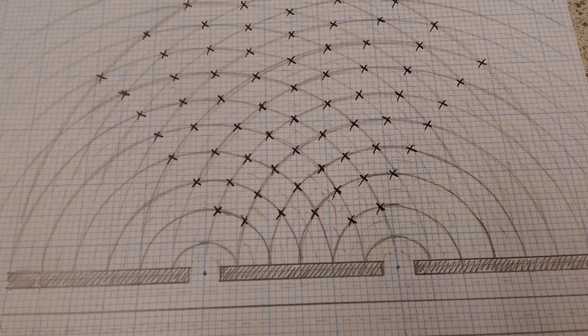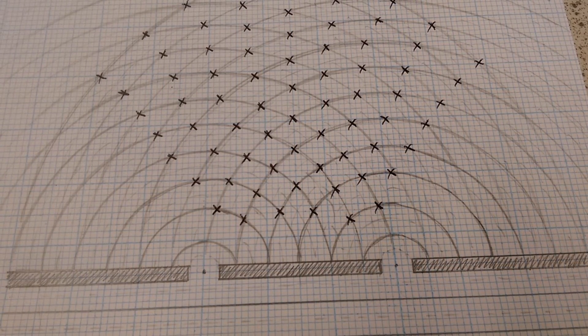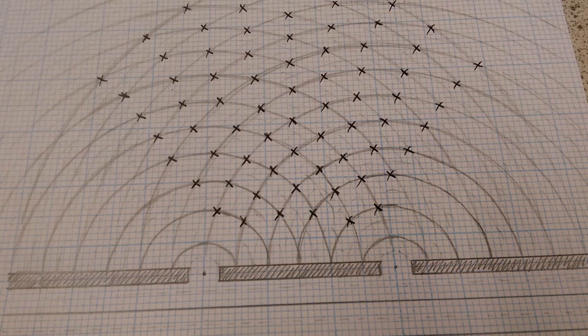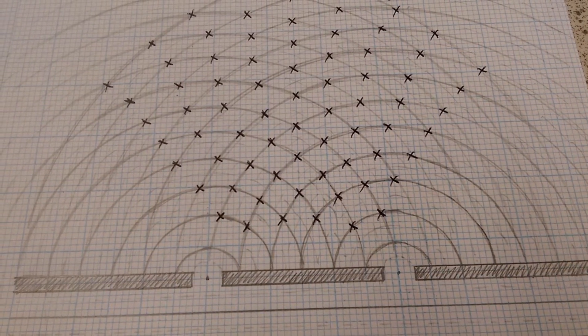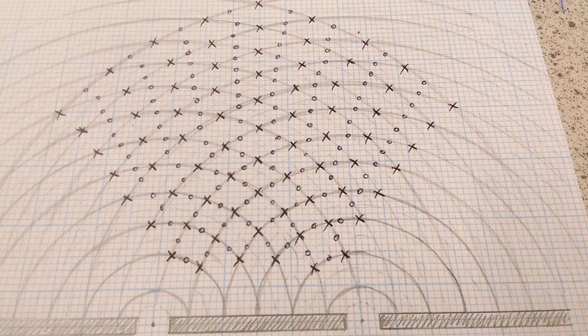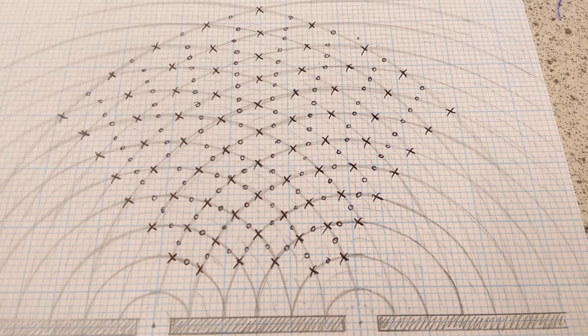So at every point where a peak meets a trough, we have a point of zero energy transfer. So what I'm going to do is go through and find those points and mark them with a little nought, a little zero. So there we go, you can see that those points, the points of destructive interference, or zeros, all line up as well.